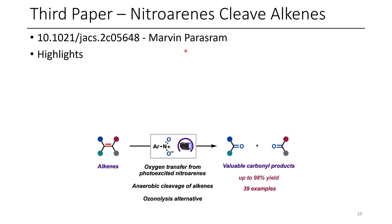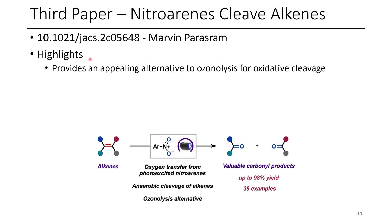The third paper for today is the oxidative cleavage of alkenes with nitroarenes. The highlights of this paper include an appealing alternative to ozonolysis, which would be the typical set of conditions for oxidative cleavage. This also complements Lemieux-Johnson oxidation, which is dihydroxylation with ozonolysis and periodate cleavage. I've also made a video on Lemieux-Johnson oxidation in the past, and I'll include a link to that in the description.